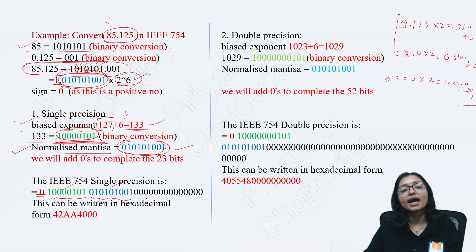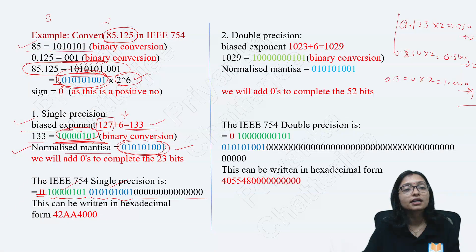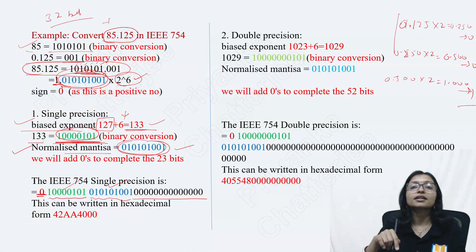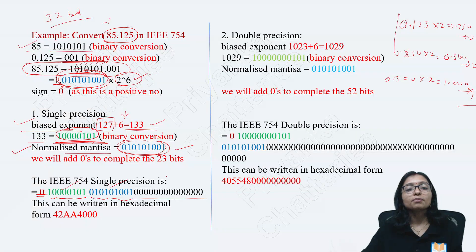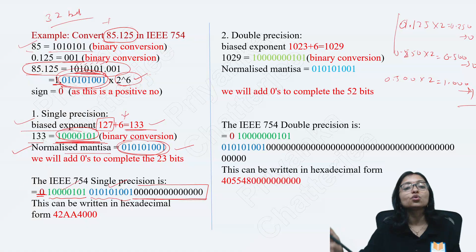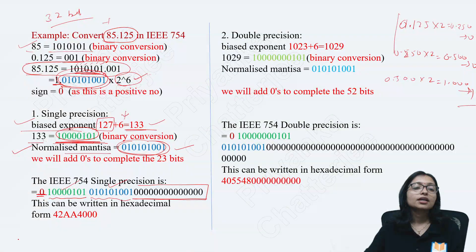After that you are adding some zeros. Why are these zeros required? To complete the 32 bits. Because it is either 32-bit or 64-bit. However many bits are remaining, those bits you are adding here to complete the 32 bits. After completion you represent it in hexadecimal.